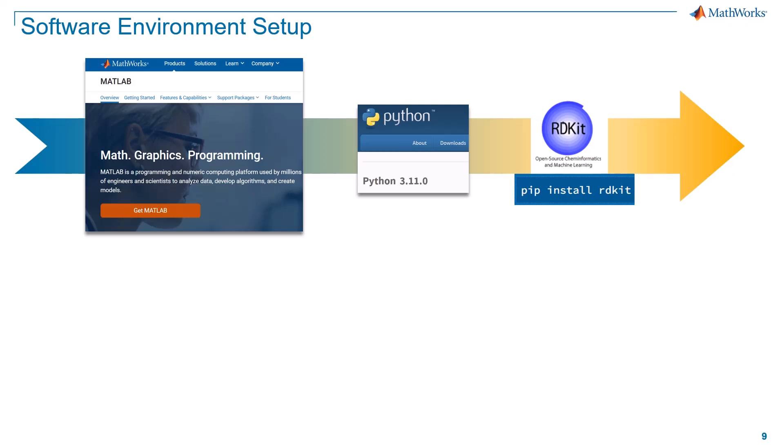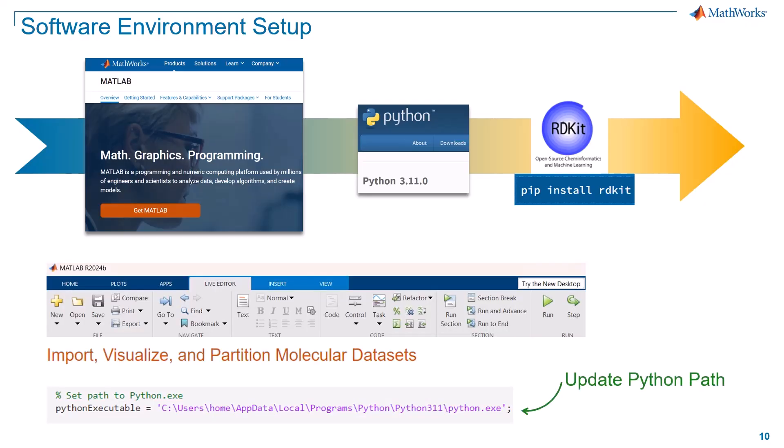After that, you need to install rdkit, which is a chemoinformatics package. Simply copy this pip install command and run it in your command prompt to install it. Remember that you need to give the Python installation path to MATLAB. This enables MATLAB to interface with Python, allowing us to call Python functions and utilize rdkit libraries directly from within MATLAB. With these steps completed, you are all set to run this example.